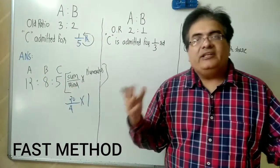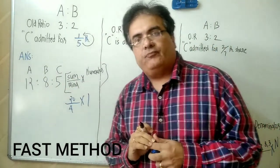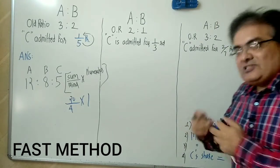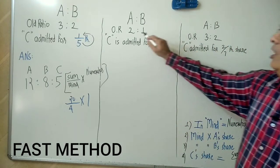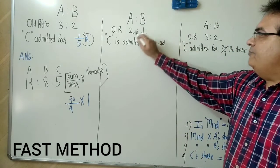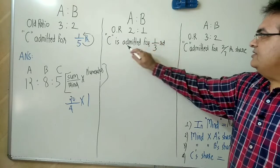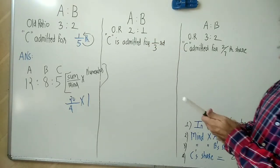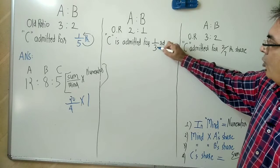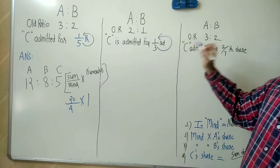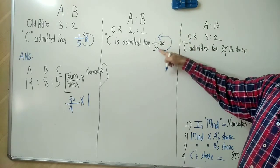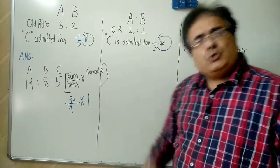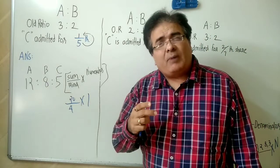Let's go even faster. A and B are in ratio 2:1, and C is admitted for one-third. First step: denominator minus numerator — 3 minus 1 = 2. Keep 2 in your mind.